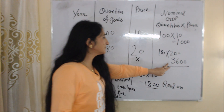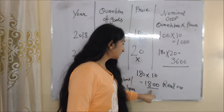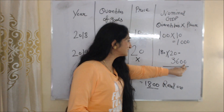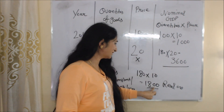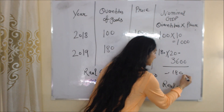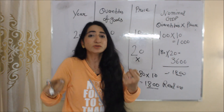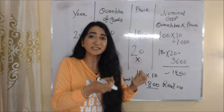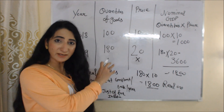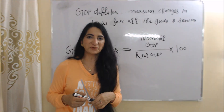Our nominal GDP was 3600 and our real GDP was 1800. The difference between 3600 and 1800 is 1800. This 1800 in nominal GDP was not actually the growth of the economy — it was just the effect of inflation. But our real GDP is free from any effect of inflation.